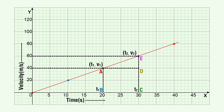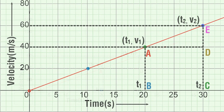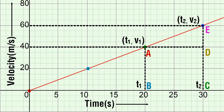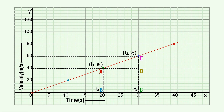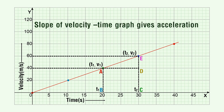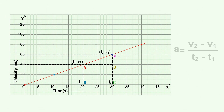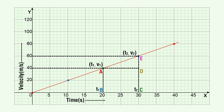Velocity-time graph: a velocity-time graph is the graphical representation of the change in velocity of an object with time. We plot time on the x-axis and velocity on the y-axis. The slope of the graph is the ratio of the vertical change between two points to the horizontal change between two points. The slope of the velocity-time graph gives acceleration: a is equal to (v2 minus v1) divided by (t2 minus t1).